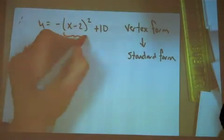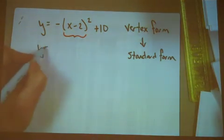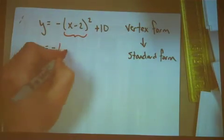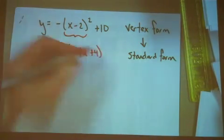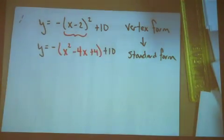For our last example, let's look at one that has an invisible negative 1 out front. We're still going to begin by squaring the binomial. Don't forget the negative 1 outside though. This one becomes x squared minus 4x plus 4 and of course bring down the constant of 10.